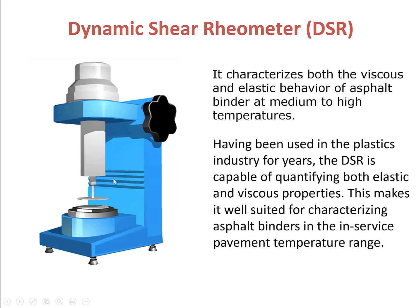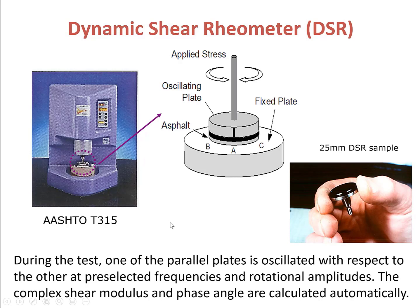This figure shows a schematic illustration of the experimental setup. The lower plate will be fixed, and the upper plate will be oscillating with respect to the lower plate, and the sample will be put between the two plates. The experimental procedure is documented in AASHTO T315.